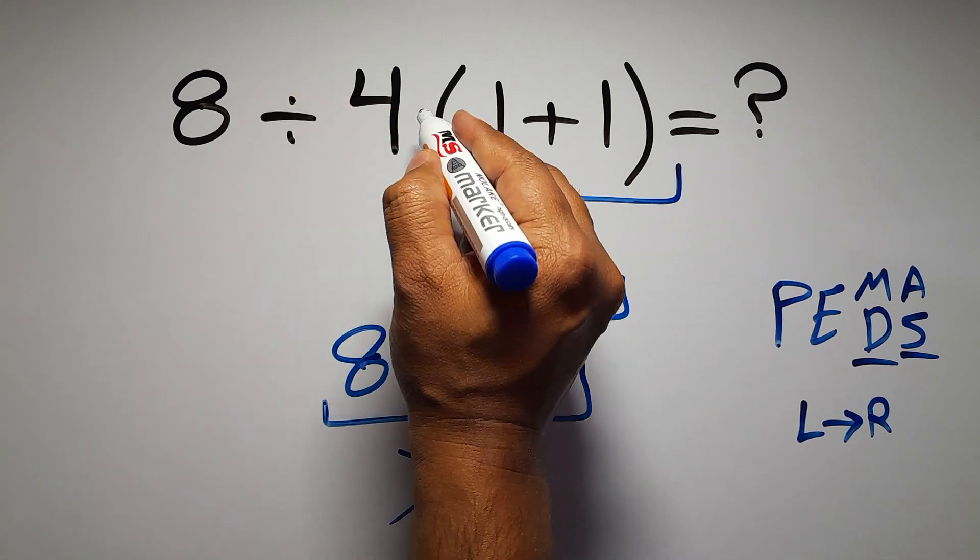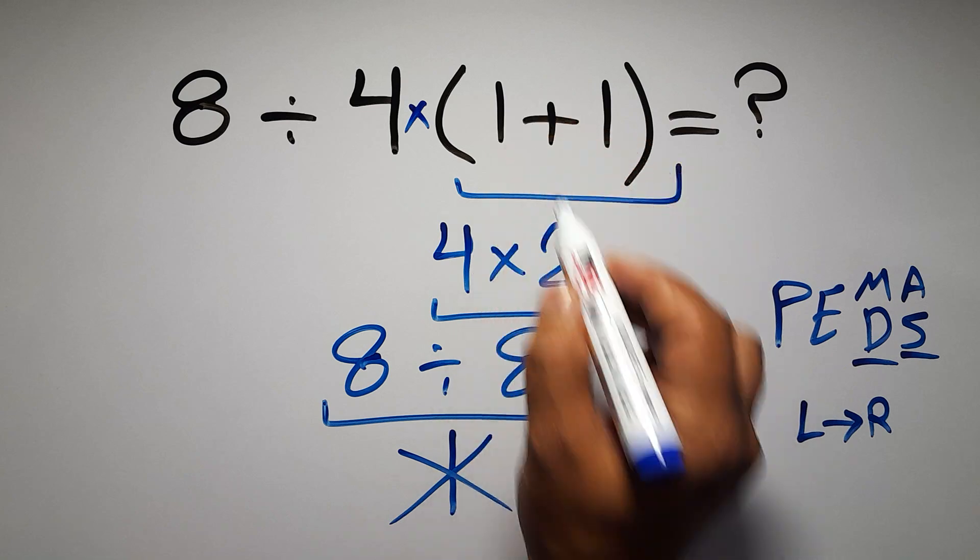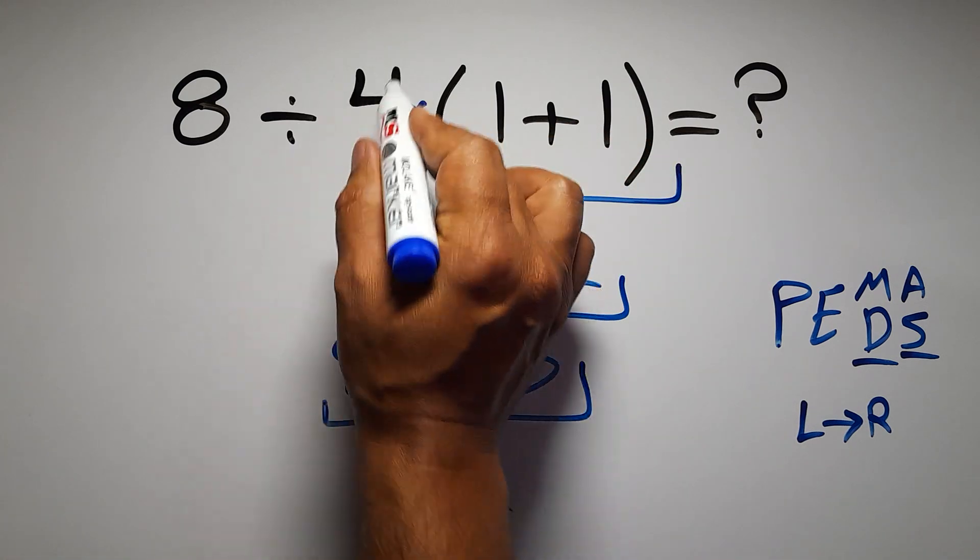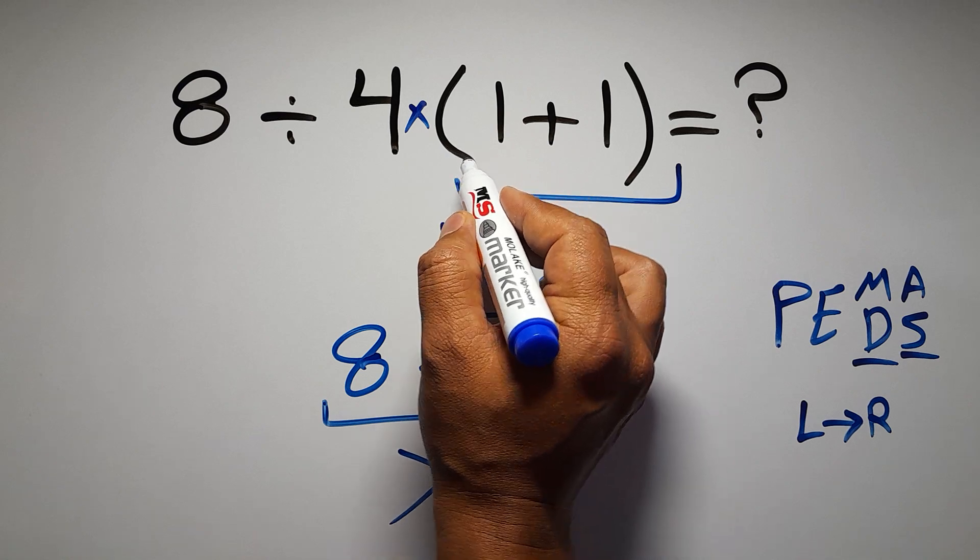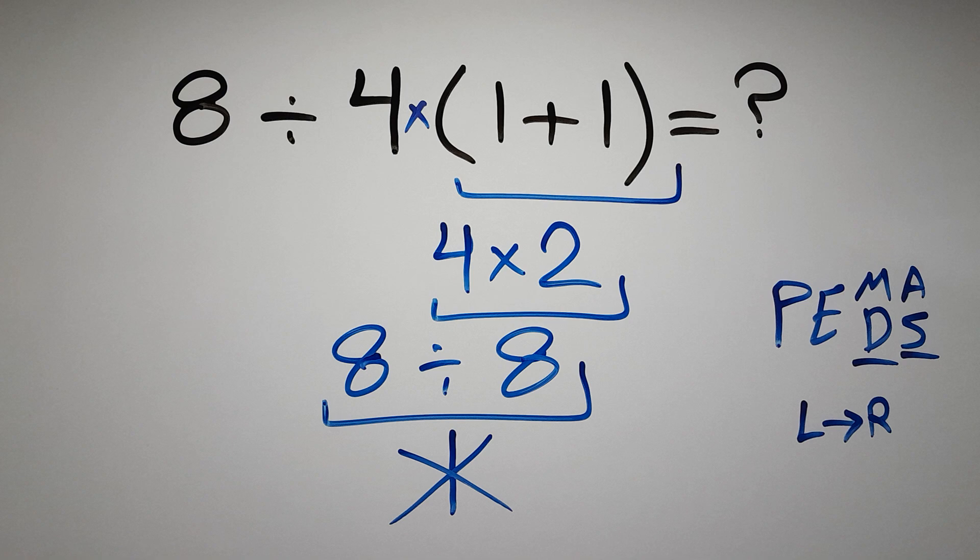In this expression, we have one division, one multiplication, and one parenthesis. Inside this parenthesis, we have one addition. Here we have a multiplication, because in mathematics, when a number is placed next to parenthesis, it means multiplication, and we usually don't write the multiplication sign for brevity.